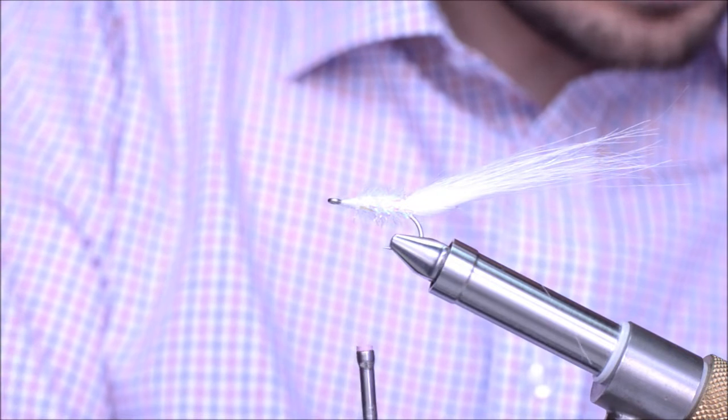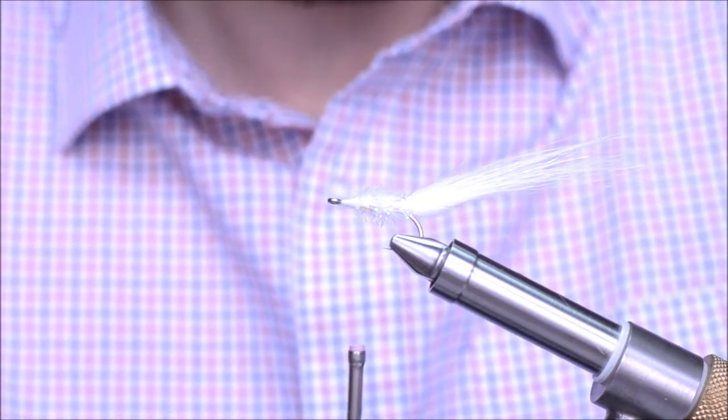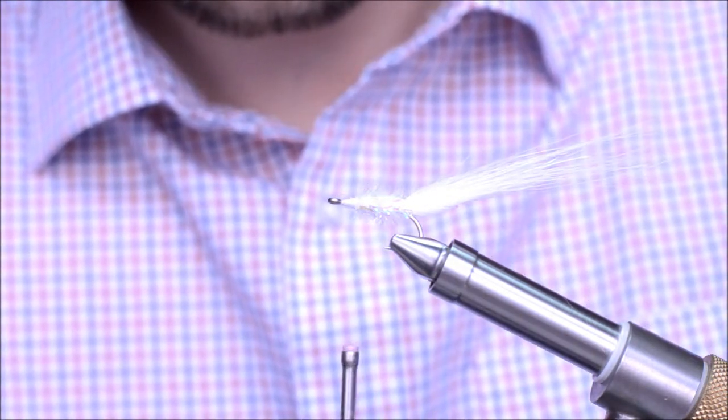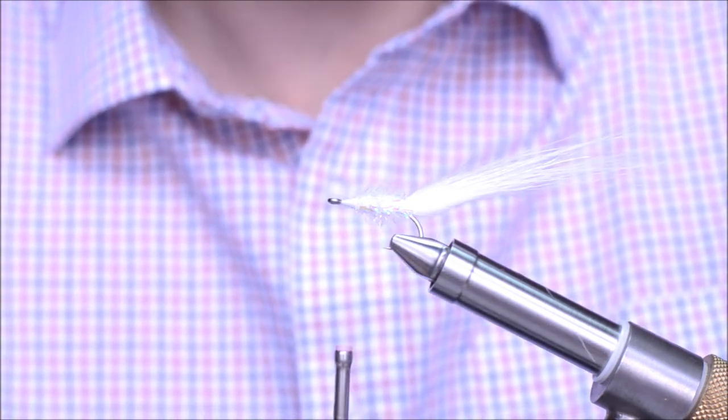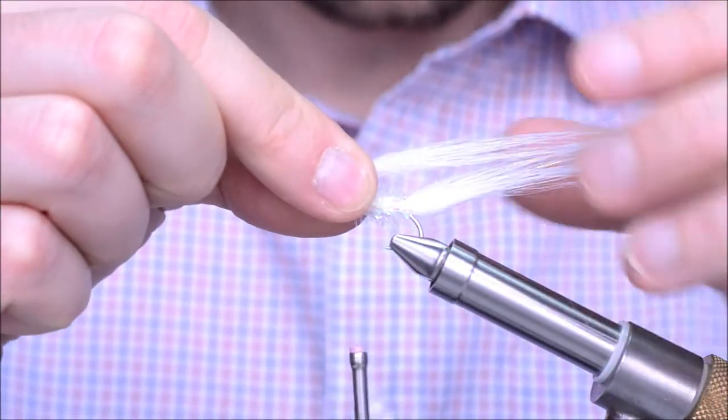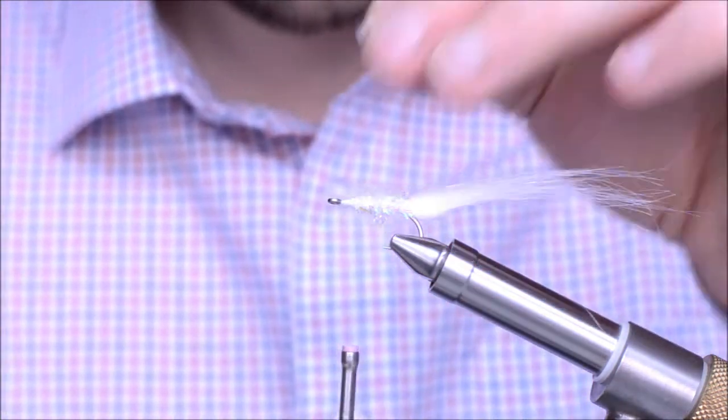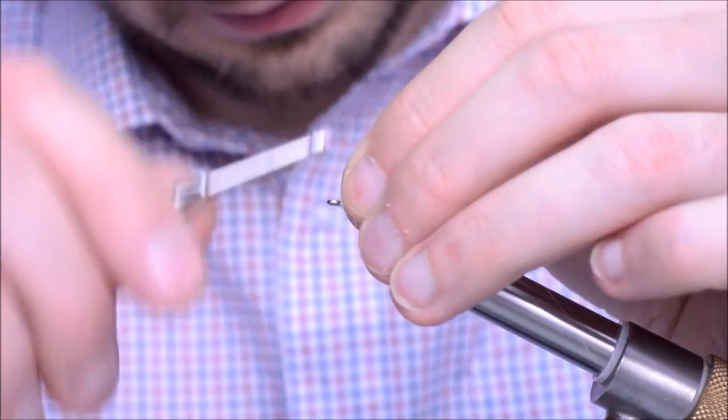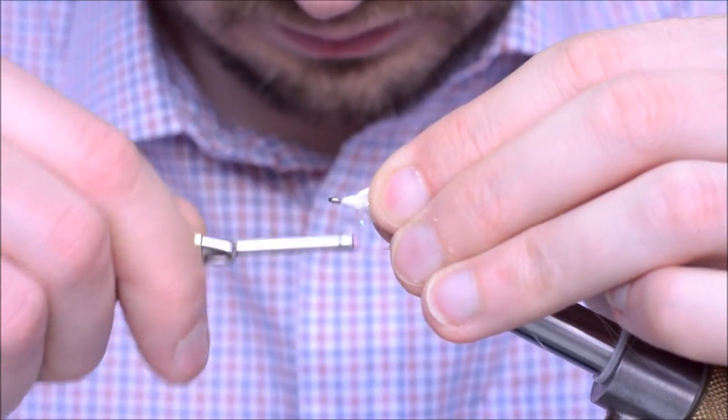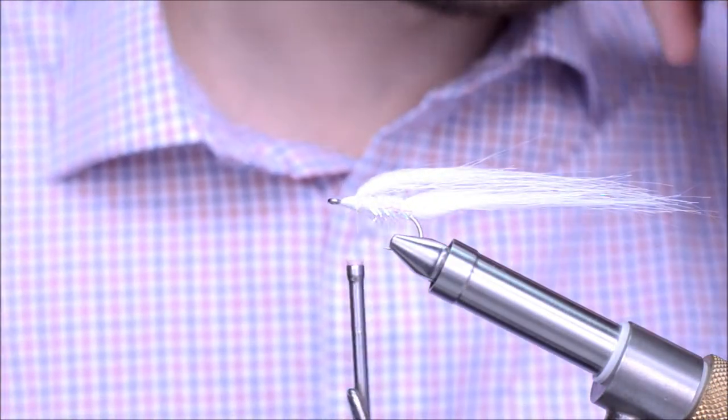For the underwing, white craft fur. Again, the same procedure, pull out the fuzzies and the longest hair. The length of the wing, the same as the whole fly. Again, I like mine really nice and sparse. You can make them nice and fat, but I prefer them slim.